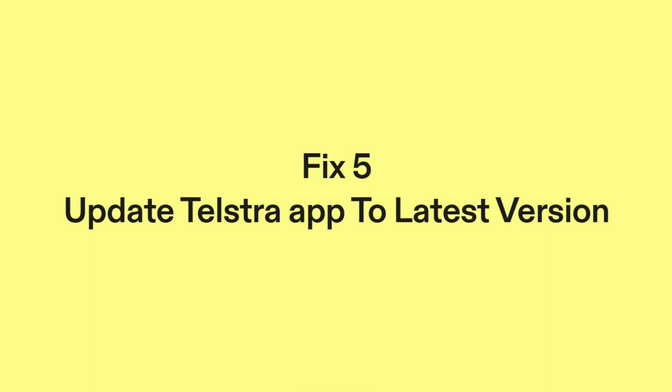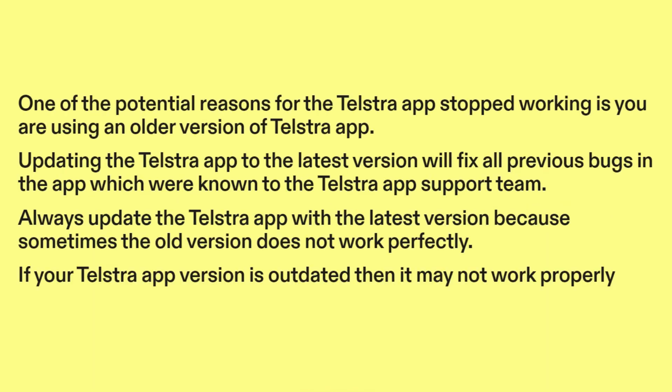Fix 5: Update the Telstra app to the latest version. One of the potential reasons the Telstra app stopped working is that you are using an older version. Updating to the latest version will fix all previous known bugs. Always update the Telstra app because sometimes the old version does not work perfectly.